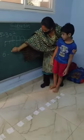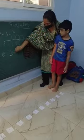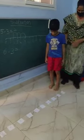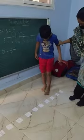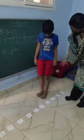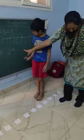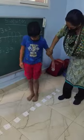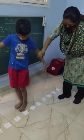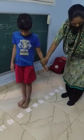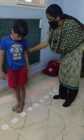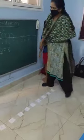Now next one: 6 minus 3. So what is the first number? 6. Stand on 6. How many times do you have to jump backwards? 3. Jump 3 times: 1, 2, 3. Which number did you get? 3. So the answer is 3.